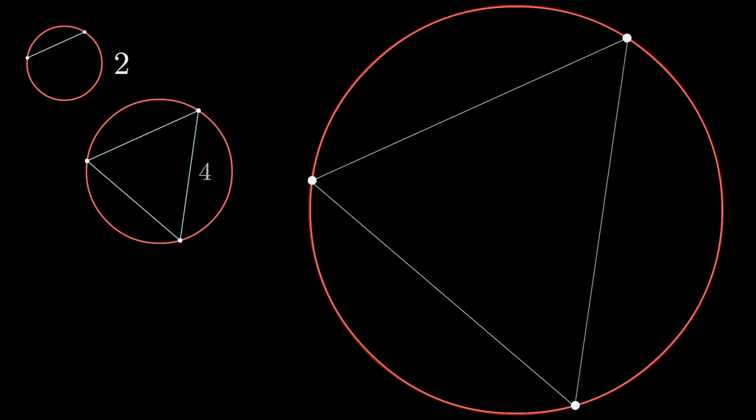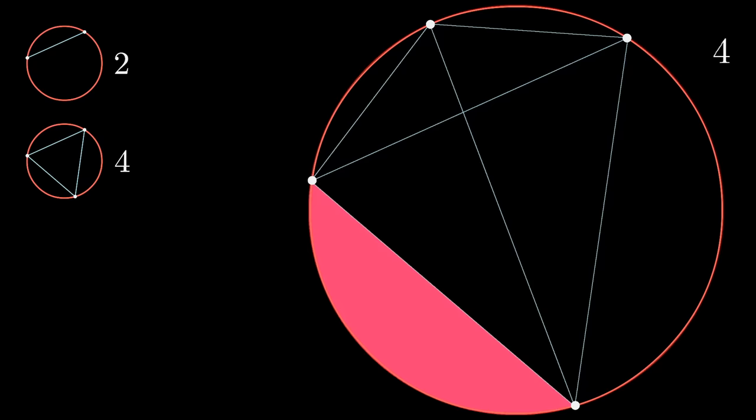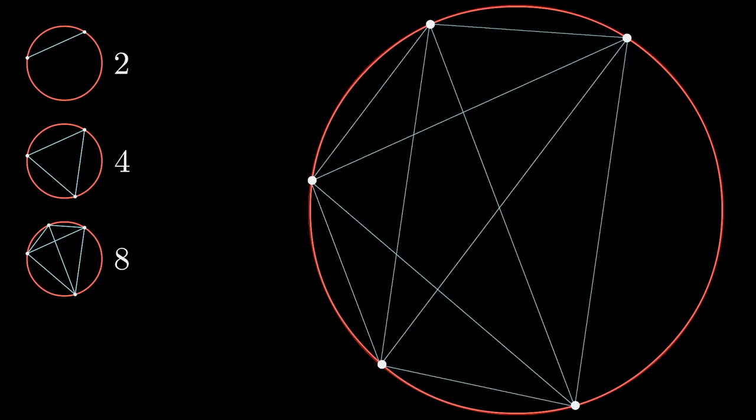Then if you add a fourth point and connect that to the previous three, and you play the same game, you count up how many regions has this cut the circle into, you end up with eight. Add a fifth point to the circle, connect it to the previous four, count up the total number of regions, and if you're careful with your counting you'll get a total of 16.